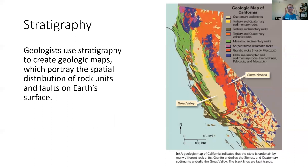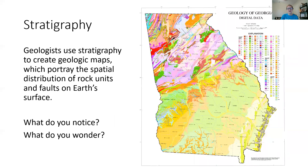Geologists also create geologic maps. Here's a geologic map of California where all of the different colors represent different rocks. Here's another one for Georgia — again, all those different colors represent all the different types of rocks in Georgia. I want you to look at this one because this is where we live — think about what do you notice and what do you wonder about our geologic map.